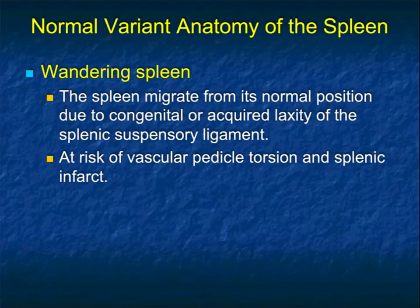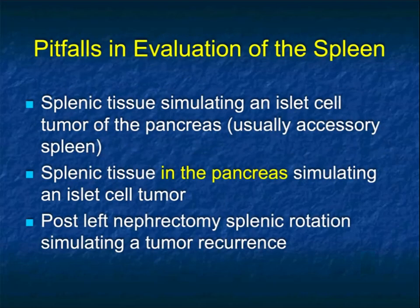The last variant to mention is a wandering spleen, where the spleen migrates from its normal position in the left upper quadrant due to congenital or acquired laxity of the splenic suspensory ligaments. Once this occurs, the spleen can easily twist on its pedicle, causing infarction and presenting as an acute abdomen — something very important to consider.